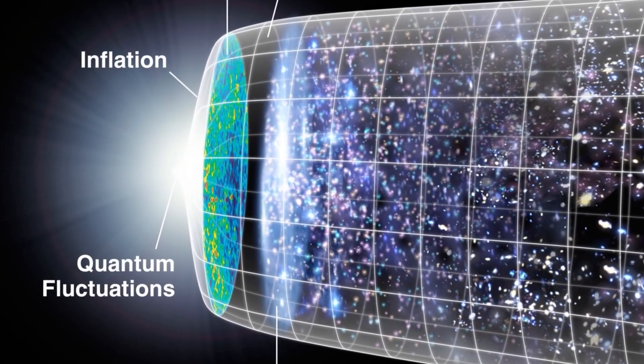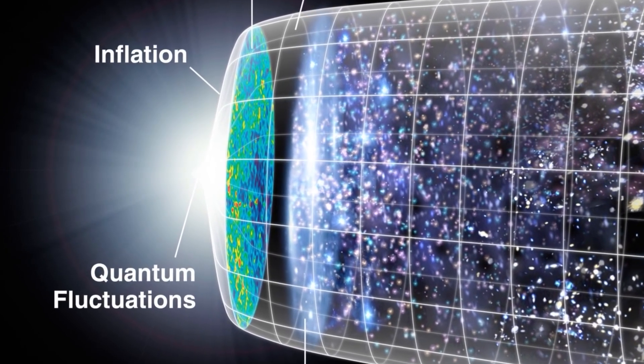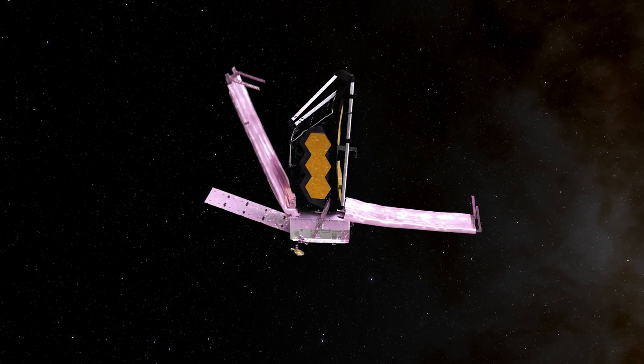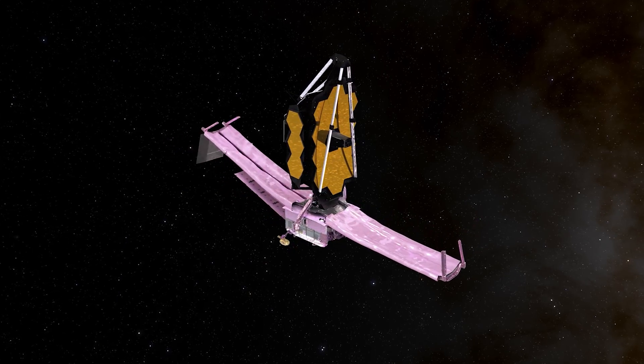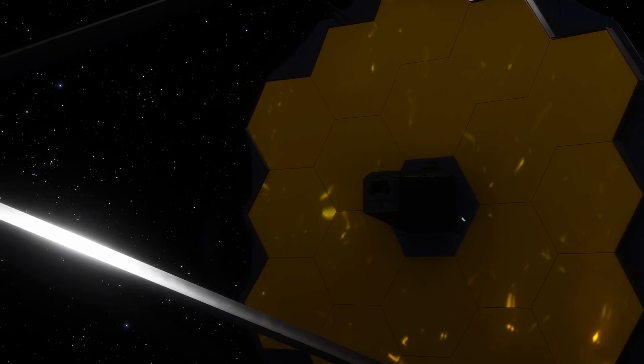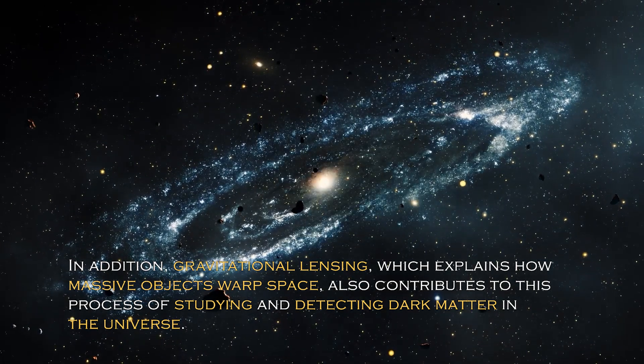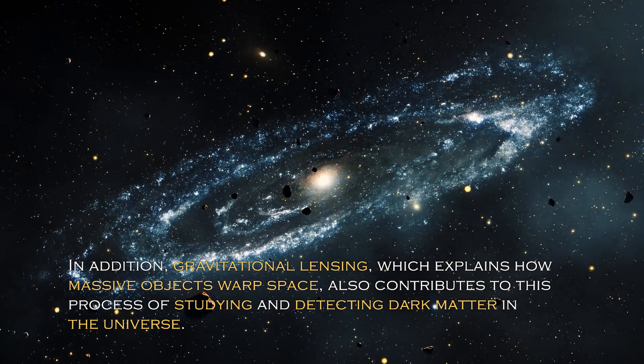The theory of universal expansion suggests that the universe is constantly expanding, pushing galaxies and galactic clusters farther apart — a process believed to have occurred since the beginning 13 billion years ago. Scientists postulate that dark energy is a mysterious force behind this expansion, while dark matter, invisible but existing in the universe, also plays a crucial role. Several methods have been developed to detect dark matter, with the James Webb being a valuable resource due to its high-resolution images and gravitational lensing, which explains how massive objects warp space.